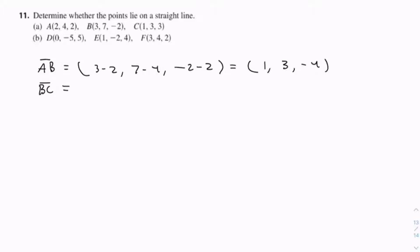And for BC, we have 1 minus 3, 3 minus 7, 3 minus minus 2, which is plus 2. And that is negative 2, negative 4, 5.